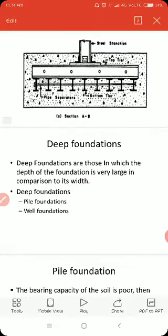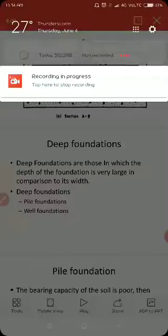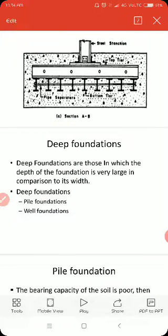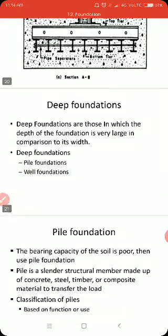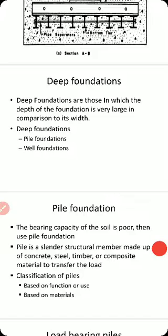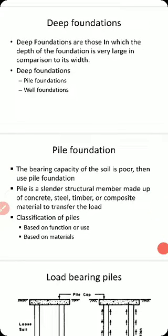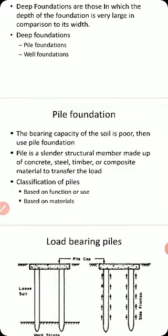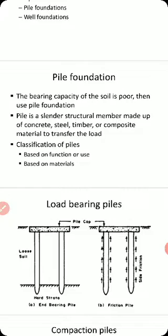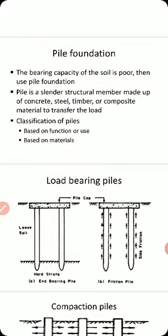The second main classification is deep foundation, meaning the foundation having depth greater than its width. Deep foundation may be mainly classified as pile foundation and well foundation. Pile foundation is provided for heavy structures and where the bearing capacity of soil is very poor. It is also used for tall slender structures. A pile is a slender structural member made of concrete, steel, timber, or composite material, and it is planted into the ground.